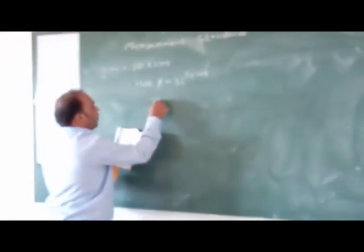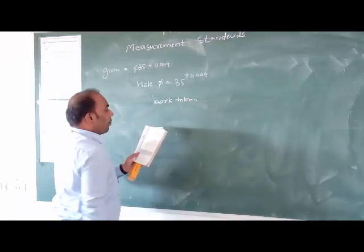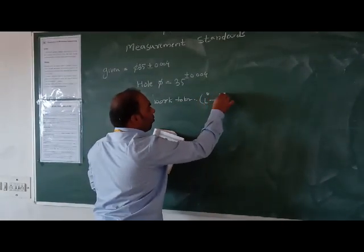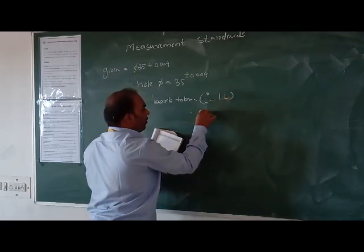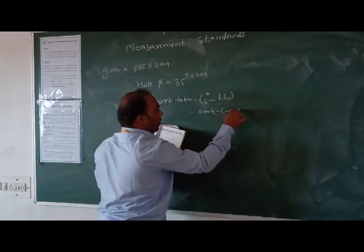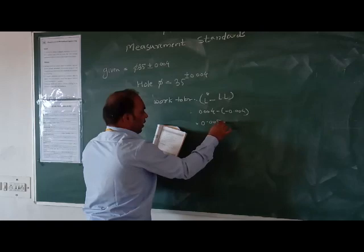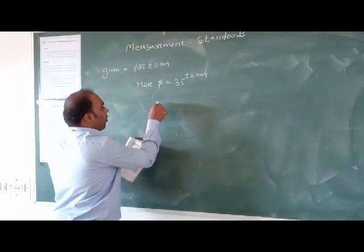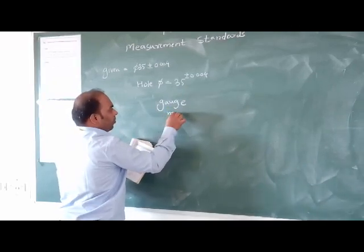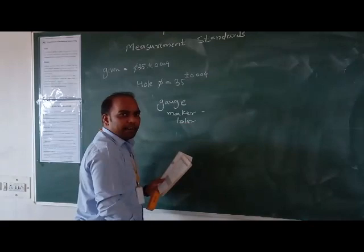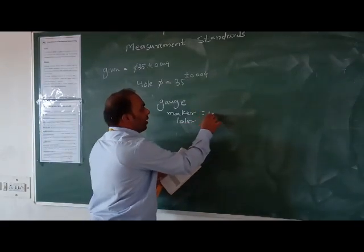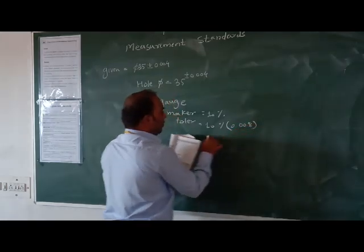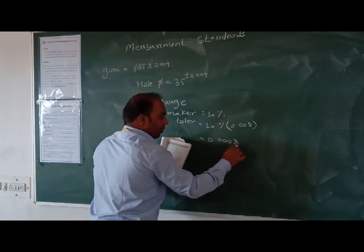Work tolerance is upper limit minus lower limit: 0.004 minus negative 0.004, which gives 0.008mm for the hole. Gauge maker tolerance is always considered as 10% of work tolerance. Therefore, 10% of 0.008 gives us 0.0008mm.